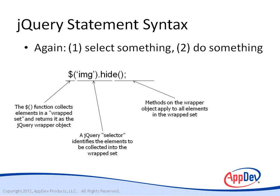Once we have elements selected into the wrapped set, we can apply any number of operations to those elements by calling methods defined on the wrapped set. In this case we're calling the hide method, which hides the selected elements. So the result of executing this statement is to hide all images on the page. The statement might look less cryptic if we had used the name jQuery in place of the dollar sign, but using the dollar sign is what all the cool kids do.